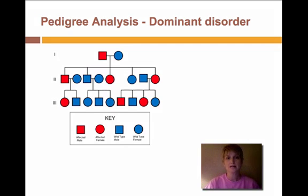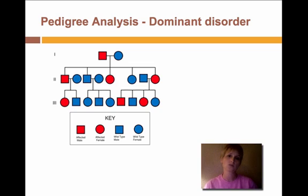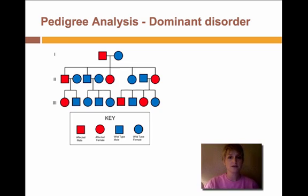Another thing we're going to talk about that has to do with heredity is pedigree analysis. Pedigree analysis is a really powerful tool for us to look at generations of families and see how a disorder has been handed down through those generations. We don't use it like a Punnett square — we're not predicting what is going to happen with offspring — but it does have some predictive power because if we look back at a family's prior history we might be able to tell if an individual is going to pass down a disorder or not.